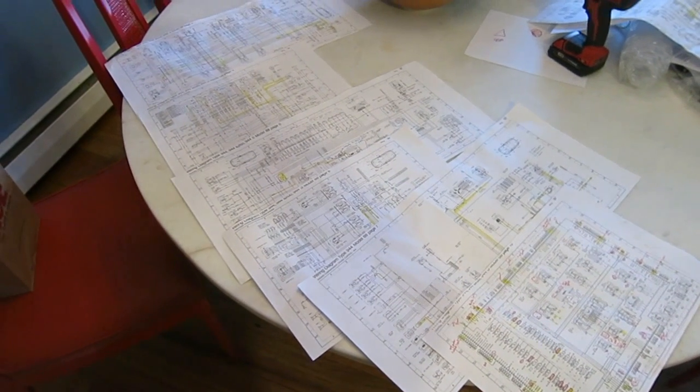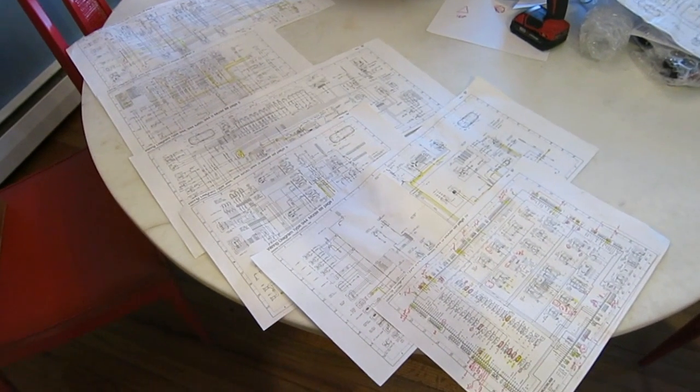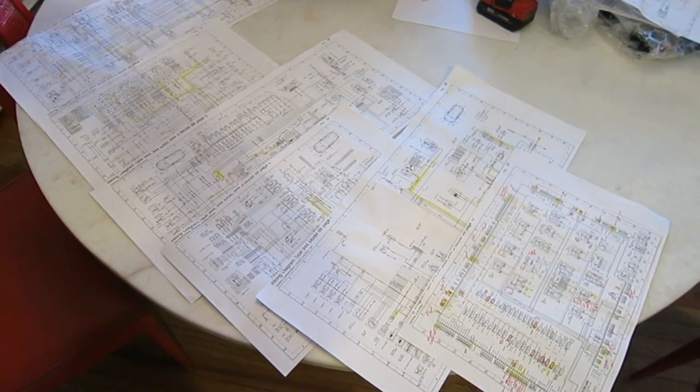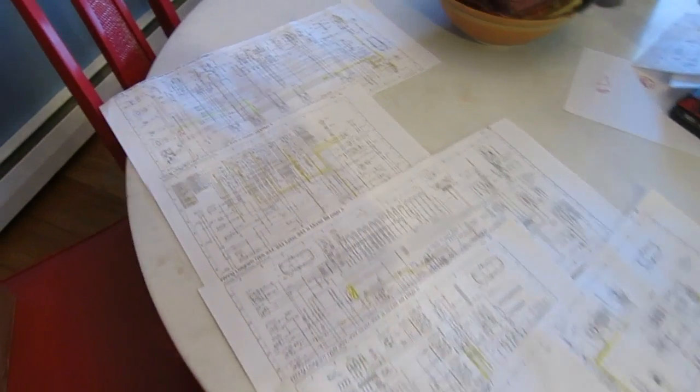So I've printed up all the PDFs on 8.5 by 11 sheets of paper, and I've taped them all together, and this is kind of my working set. I've got my own notes and highlighting and stuff like that, but I can show you some concepts of how it works.